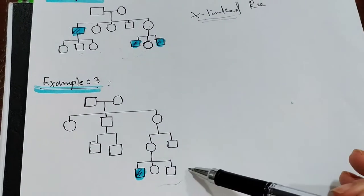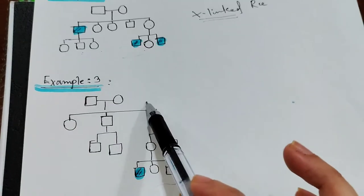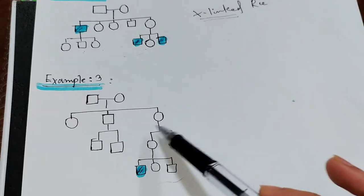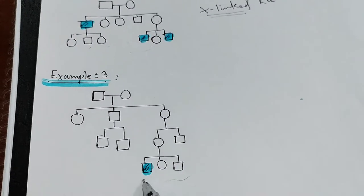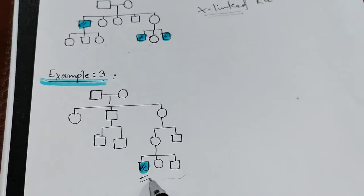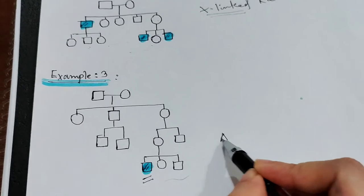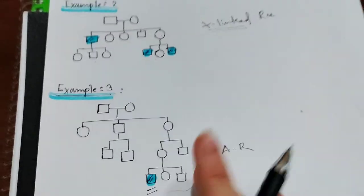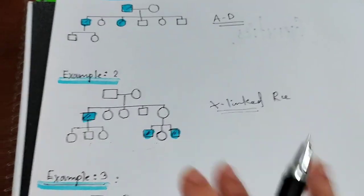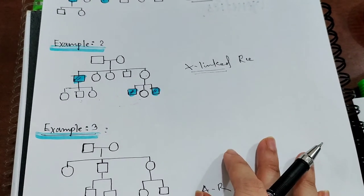This is the 'once in a blue moon' scenario. The grandparents and parents are unaffected, and among all the children, only one child is affected. If you see such a case — where only one individual in the entire family tree is affected — it is a clear case of autosomal recessive.